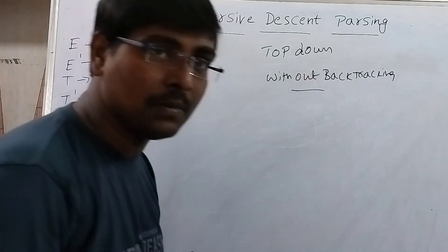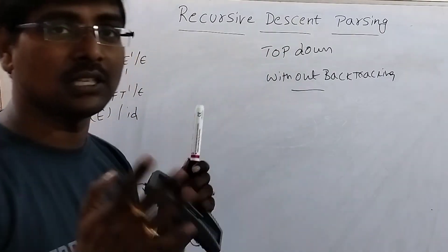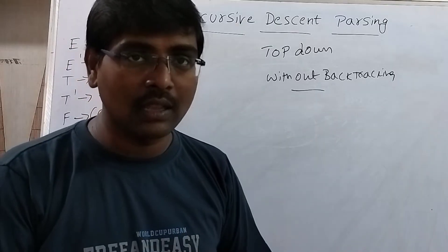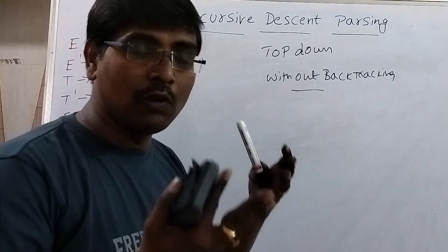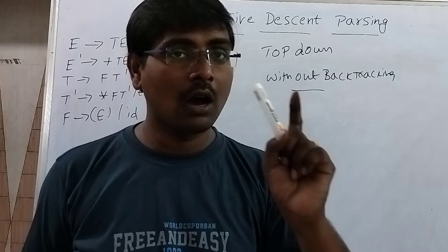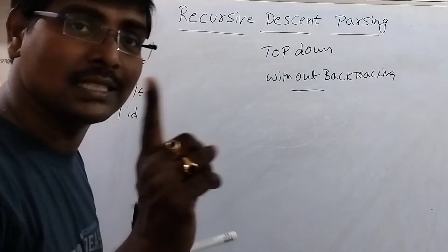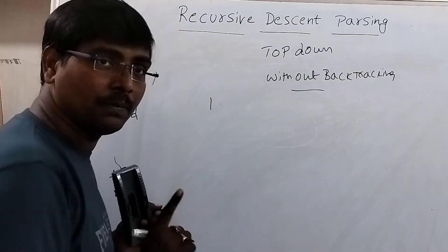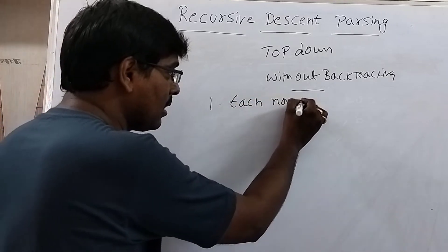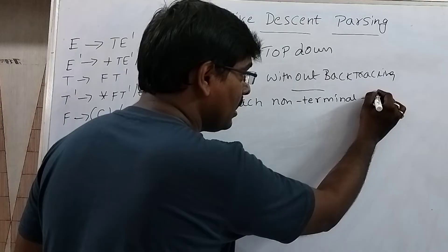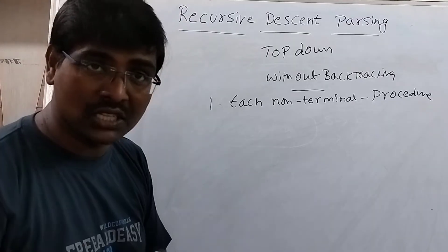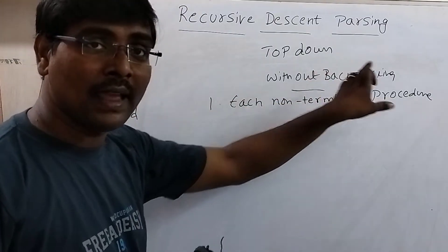Our aim is to construct the recursive descent parser for the given grammar. The procedure starts from the starting symbol of the production. Always we begin our procedure from the starting symbol. If we have a non-terminal, each non-terminal is a procedure. RDP — recursive descent parser — is implemented in terms of procedures. Each non-terminal in the grammar acts as a procedure.